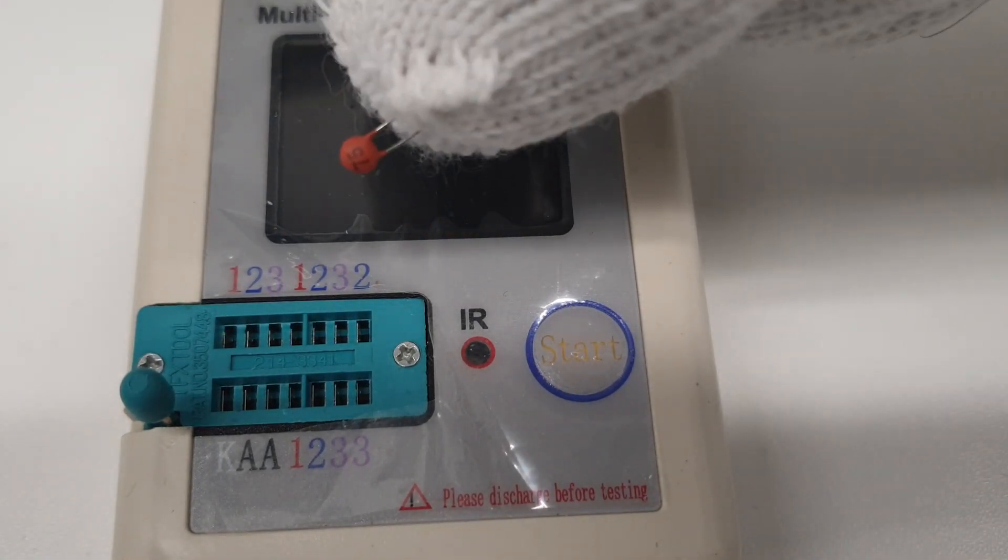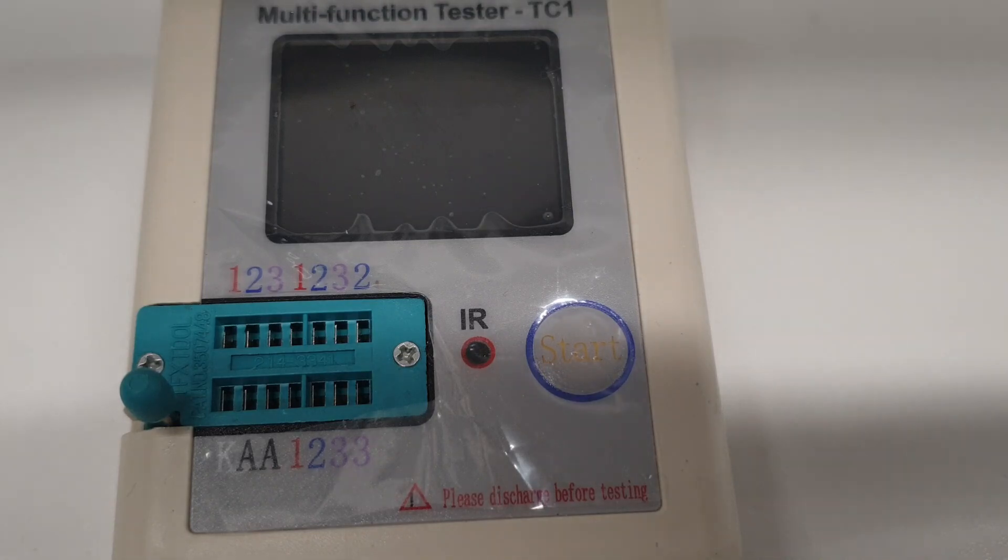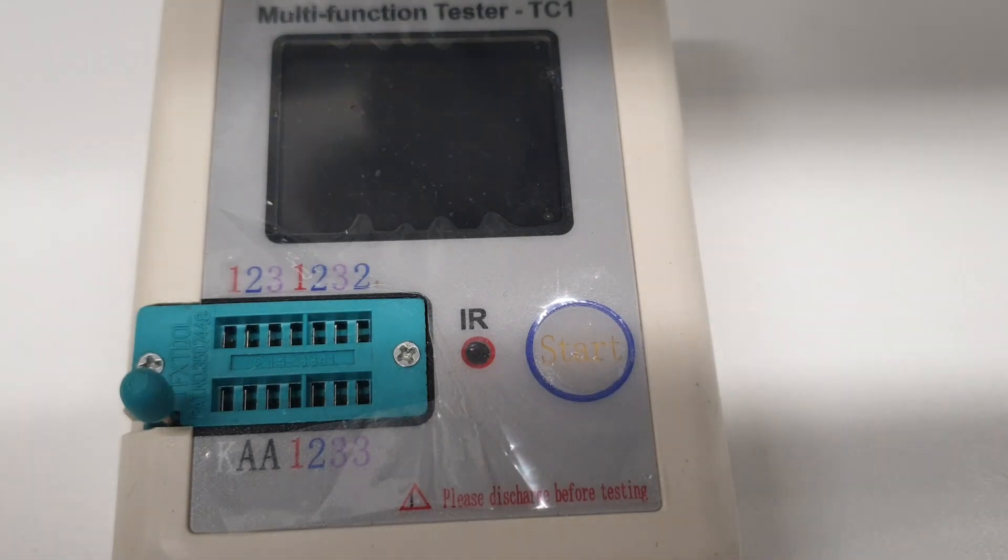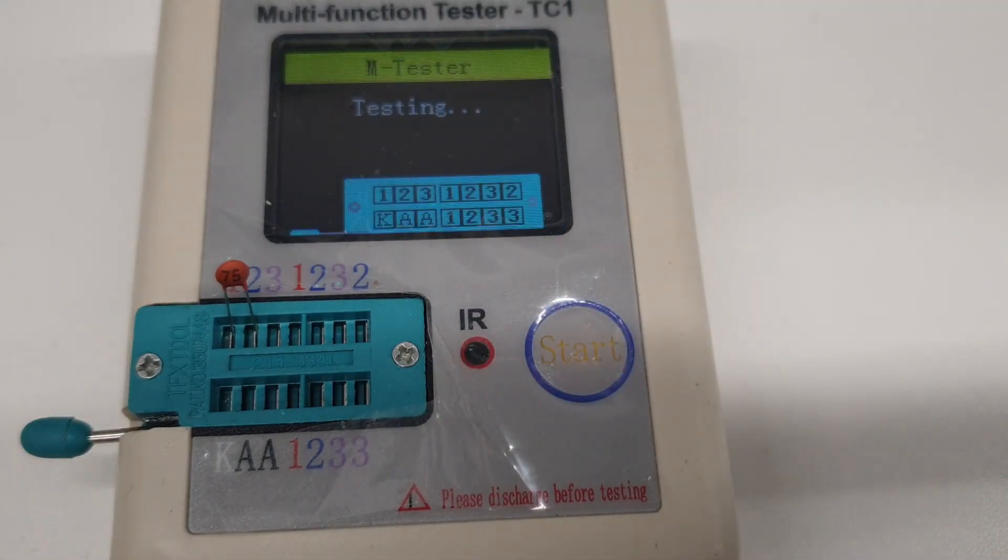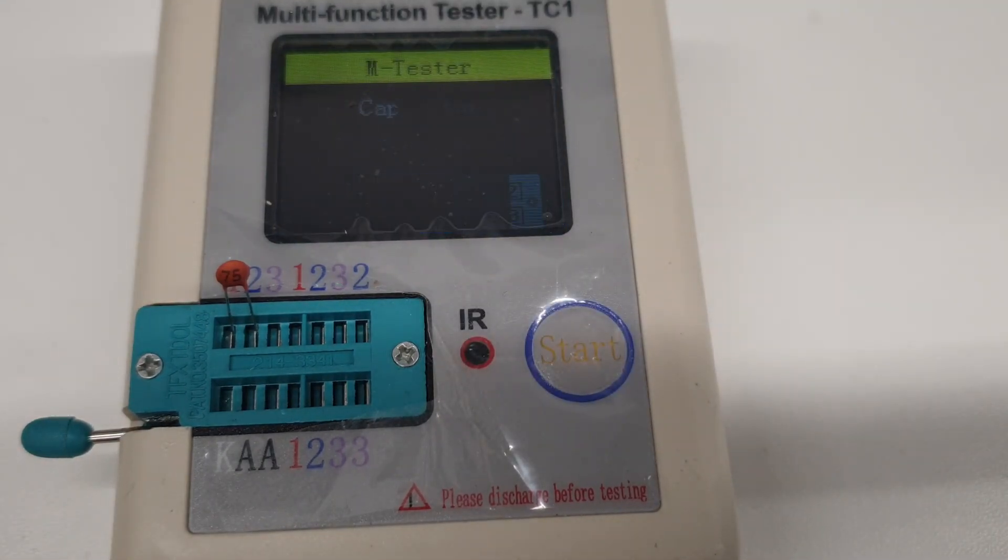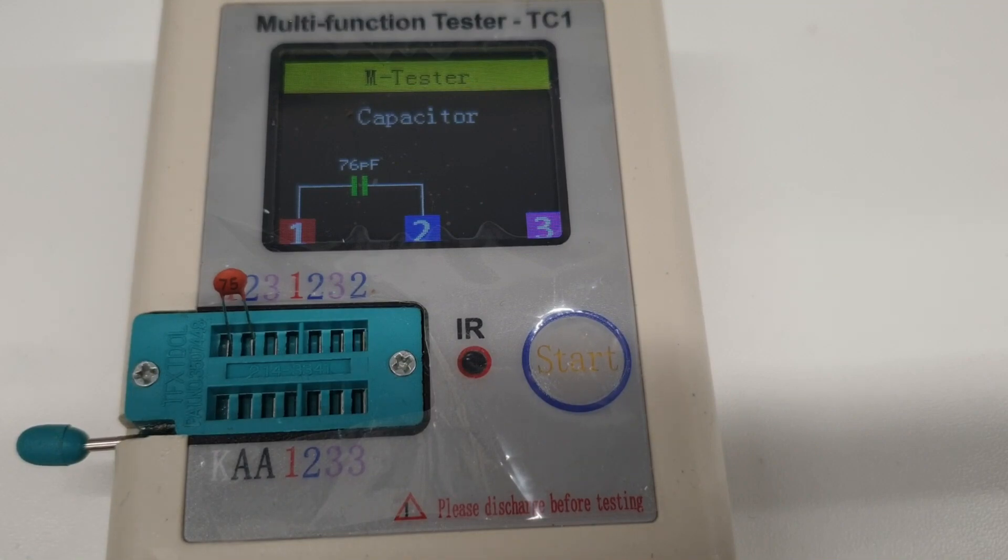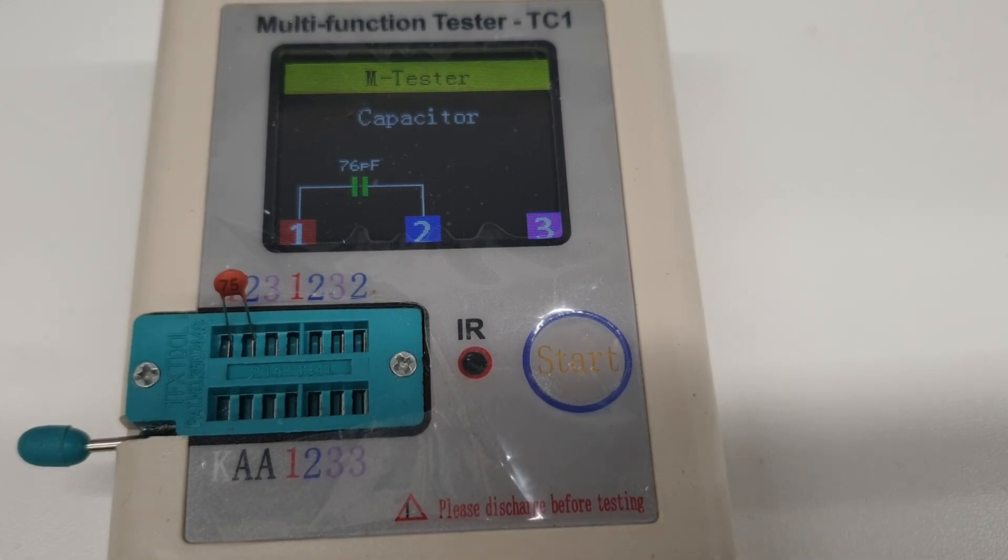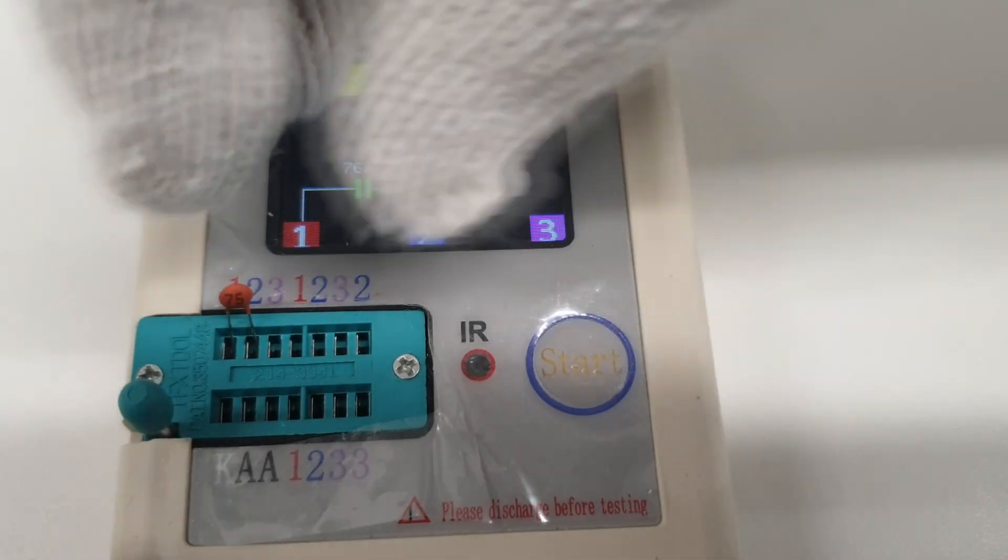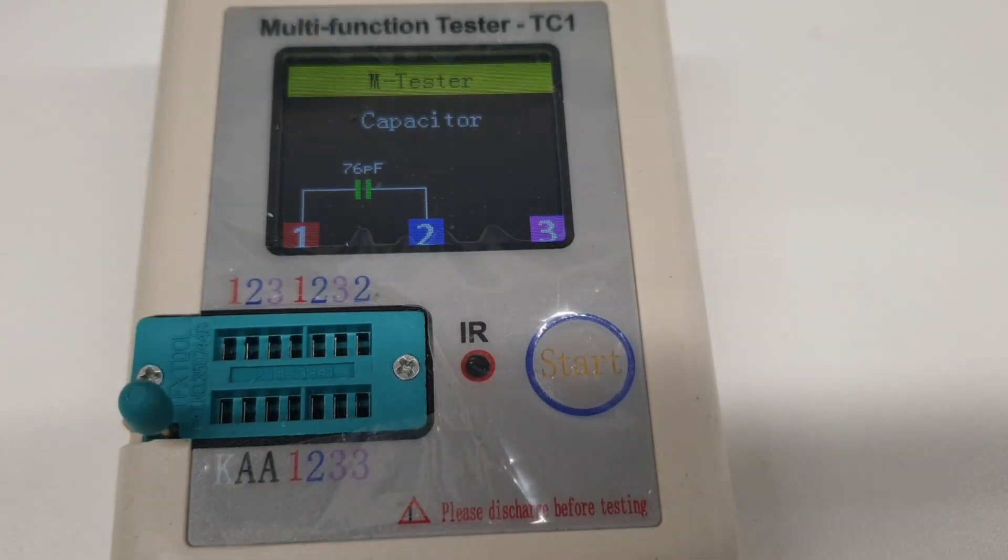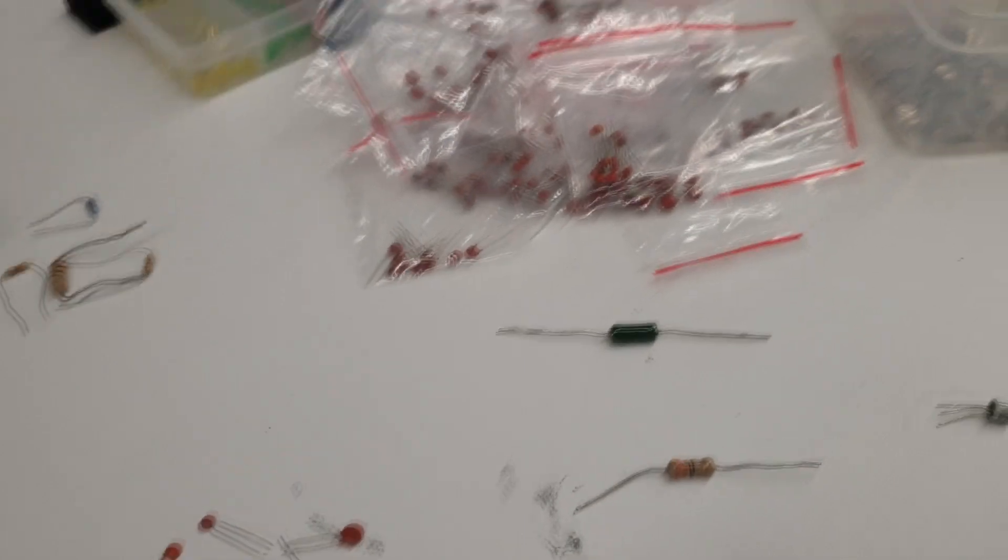Take this out. I got a lot of them, so you can see. This is a small one which is 75 picofarads. Even these capacitors are not that accurate - these are cheap ones I got in bulk. So 75 is really 76, that's good.